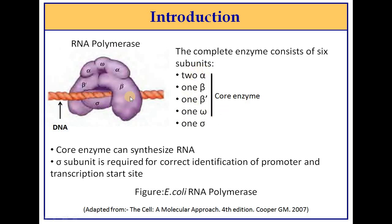There are 5 subunits — 2 alpha, 1 beta, 1 beta dash, and 1 omega — that form the core enzyme. The core enzyme is sufficient to synthesize RNA molecules. The sigma subunit is only used to identify the promoters and the transcription start site. After identification, the sigma subunit leaves the complex and the core enzyme takes care of RNA polymerization.